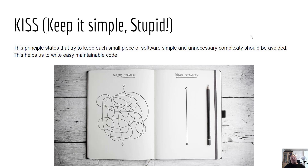The KISS principle — Keep It Simple, Stupid — is another really important principle when it comes to security. Whenever you're thinking about implementing security to a system, it's a very good idea to try to keep it as simple as possible. Whenever you overdo something, you might create a new vulnerability, and that is not the intent when thinking about security.